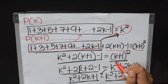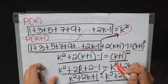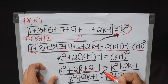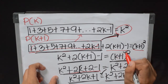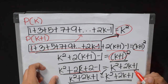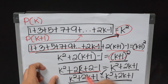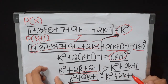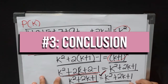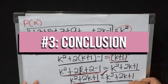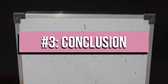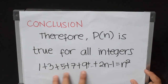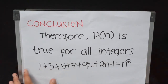So the equation becomes k squared plus 2(k+1) minus 1 equals (k+1) squared. Now we simplify: distributing 2 gives k squared plus 2k plus 2 minus 1, and expanding the binomial on the right gives k squared plus 2k plus 1. Combining like terms, we get k squared plus 2k plus 1 equals k squared plus 2k plus 1, which is true. Since the premise satisfied the second step, we can conclude that P(n) is true for all integers, and that 1 plus 3 plus 5 plus ... plus (2n minus 1) is indeed equal to n squared.